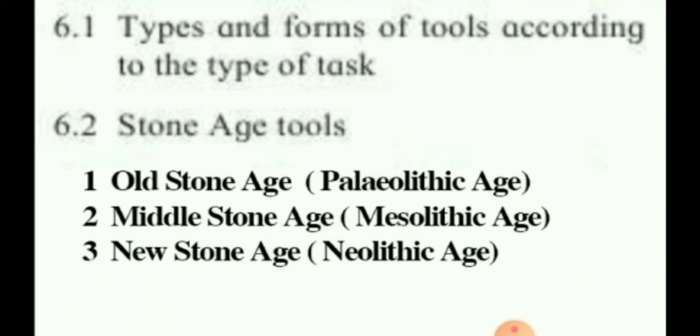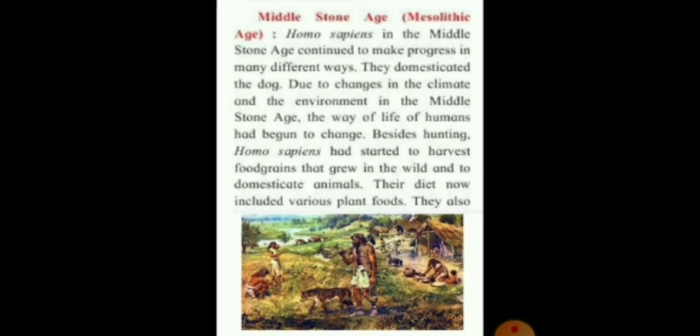Let's begin with the middle stone age, that is the Mesolithic age. Homo sapiens in the middle stone age continued to make progress in many different ways. They domesticated the dog. Due to changes in the climate and the environment, the way of life of humans had begun to change. Besides hunting, homo sapiens had started to harvest food grains that grew in the wild and to domesticate animals.